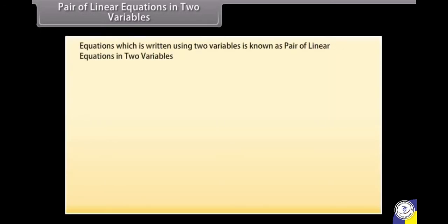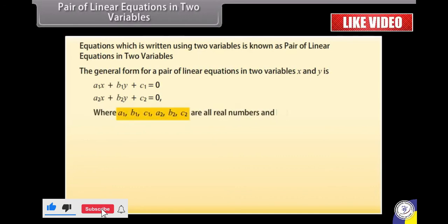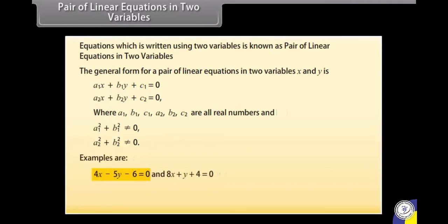Pair of linear equations in two variables. Equations which are written using two variables are known as a pair of linear equations in two variables. The general form is: A1x + B1y + C1 = 0 and A2x + B2y + C2 = 0, where A1, B1, C1, A2, B2, C2 are all real numbers, and A1² + B1² ≠ 0 and A2² + B2² ≠ 0. Examples are: 4x − 5y − 6 = 0 and 8x + y + 4 = 0; x + y = 12 and 7 = y.